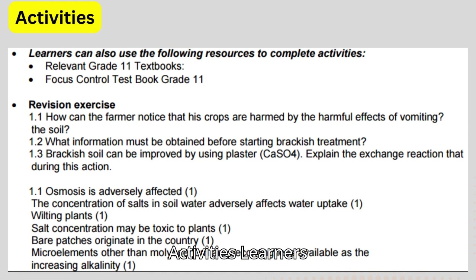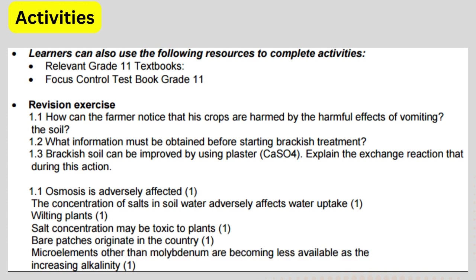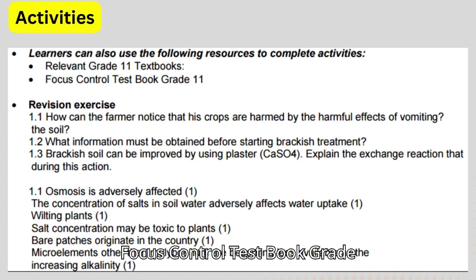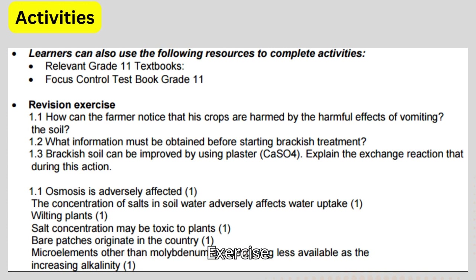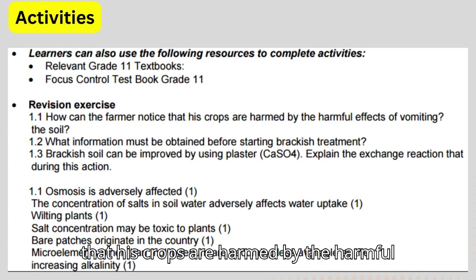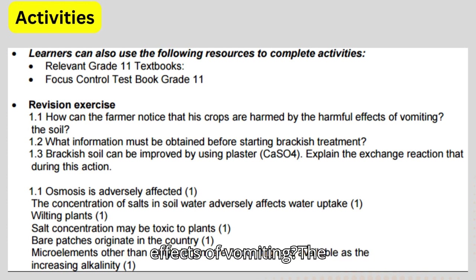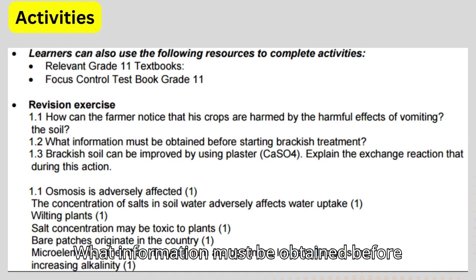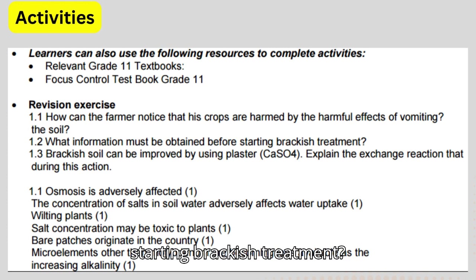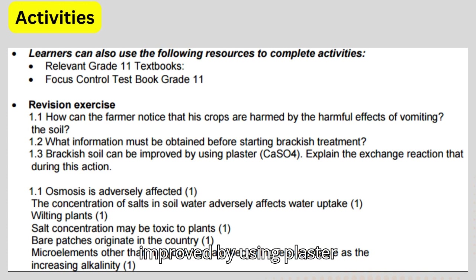Activities: learners can use relevant Grade 11 textbooks and the Focus Control Test Book Grade 11. Revision Exercise 1.1: How can the farmer notice that his crops are harmed by the harmful effects of brackish soil? 1.2: What information must be obtained before starting brackish treatment? 1.3: Brackish soil can be improved by using plaster, CaSO₄ — explain the exchange reaction that occurs during this action.